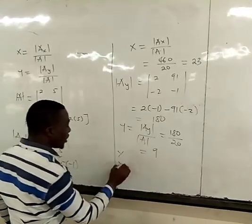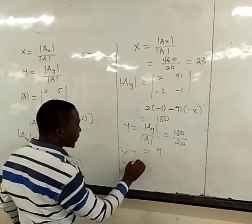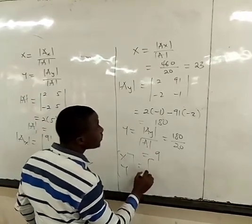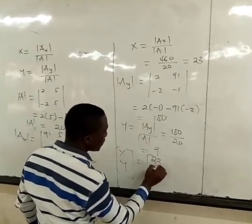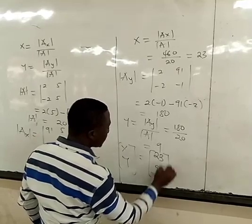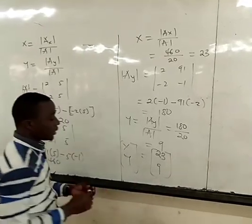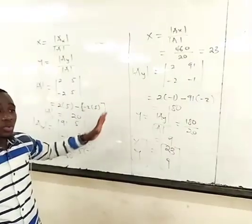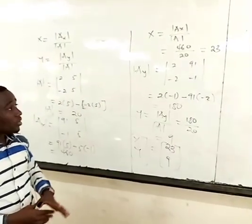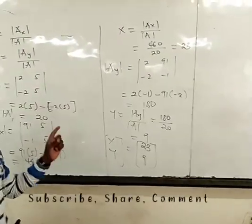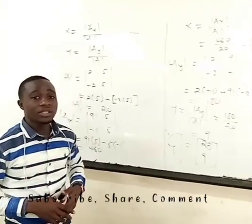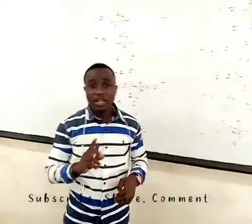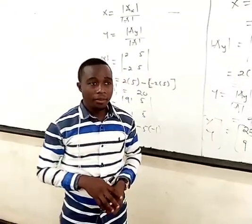So x equals 23 and y equals 9. This is how you can use Cramer's Rule to find solutions to a set of problems. Don't forget to subscribe to this channel, share the link, and leave a comment for us to give you more. We'll see you next time.